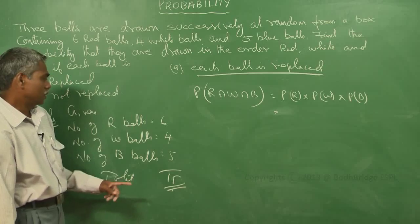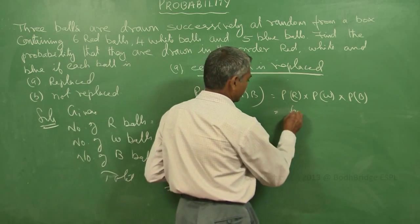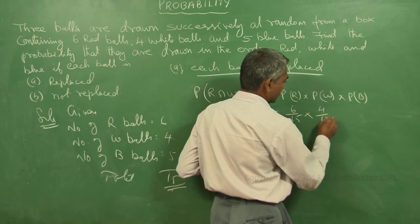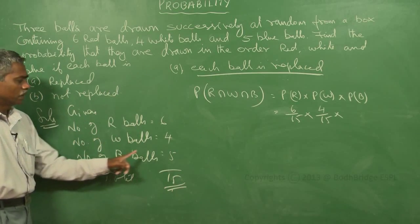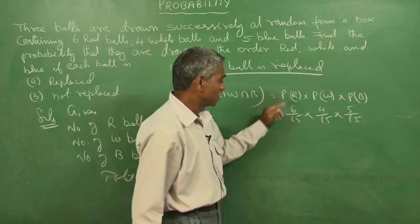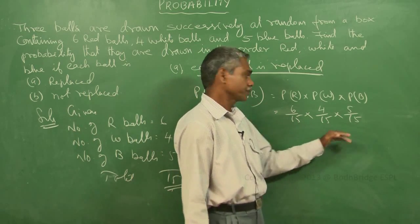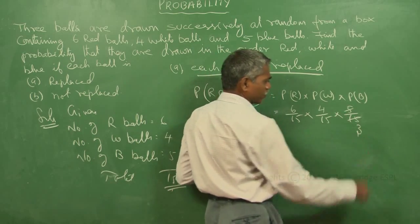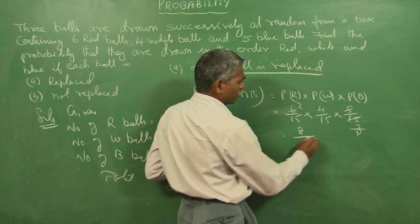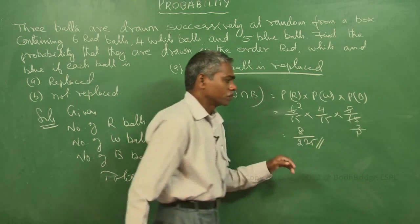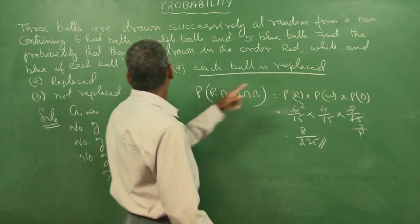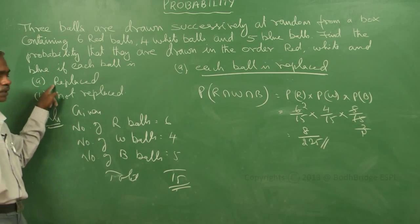P(R) = 6/15, since the number of red balls is 6 and total is 15. P(W) = 4/15, since white balls are 4 out of 15. P(B) = 5/15. Since each ball is replaced, the total number remains constant. Simplifying: 6/15 × 4/15 × 5/15 = 8/225. So the probability that the balls are drawn in order red, white and blue if each ball is replaced is 8/225.